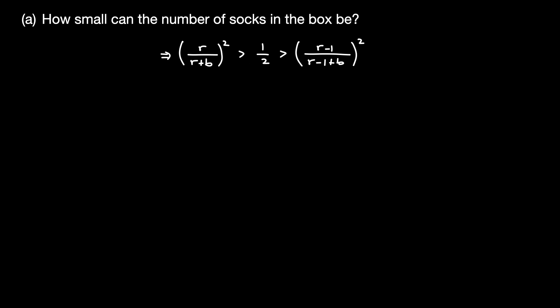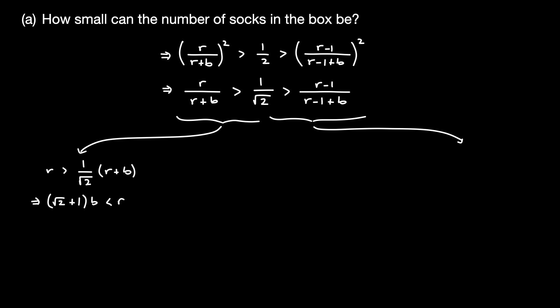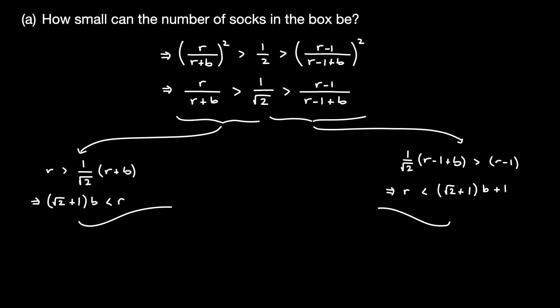Let's now simplify this inequality. We take the square root of all terms. We then work on the left inequality and the right inequality separately, simplifying each one. Similarly, we simplify the right inequality further. Now that we've expressed both inequalities in terms of the variable r — the number of red socks — we can combine them back together to form a paired joint inequality.